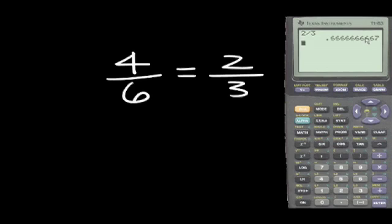If we approximate this number to the nearest thousandths — tenths, hundredths, thousandths — it's the third 6. We look to the right and there is another 6. We add 1 to the third 6 for an answer of 0.667.